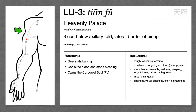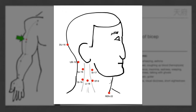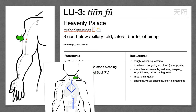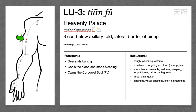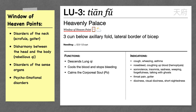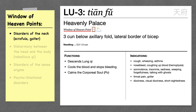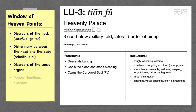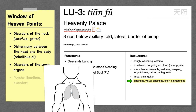Lung 3 is on the arm, three cun below the axillary fold, and it is a window of heaven point. This one is special because most window of heaven points are located on the neck, and Lung 3 is one of the few that is not. But the lung channel does go to the throat, so it makes sense. Window of heaven points treat disorders of the neck — here Lung 3 treats throat pain and goiter. They harmonize the flow of qi between the head and body, treating rebellious qi, seen here with cough and hemoptysis. They treat disorders of the sense organs — here Lung 3 treats dizziness and vision problems. The lung's descending function is able to descend excess qi out of the head.